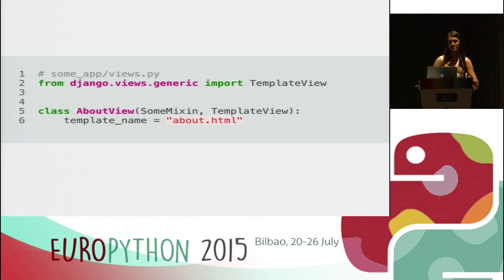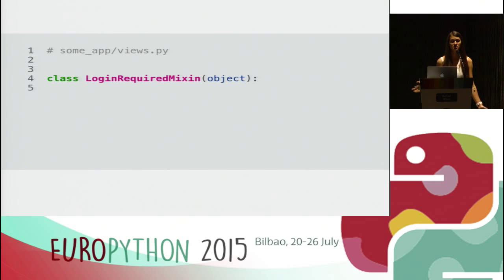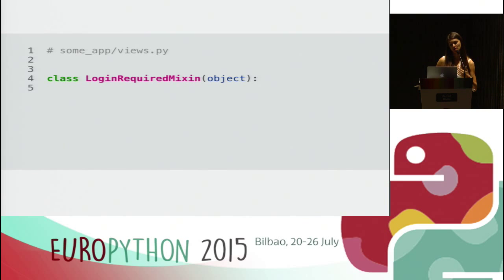Class-based views in Django are one typical use case where mix-ins feel very natural, and we're interested in plugging in a mix-in there. We know what mix-ins are and how to use them, so let's go ahead and write our own first mix-in. A common use case in web development is to protect some of our pages — we want to enforce our end users to authenticate before accessing a page. Let's create a mix-in that will check if a user is authenticated. First, we choose a good class name: LoginRequiredMixin. It inherits from object and we place it inside some app's views.py file.